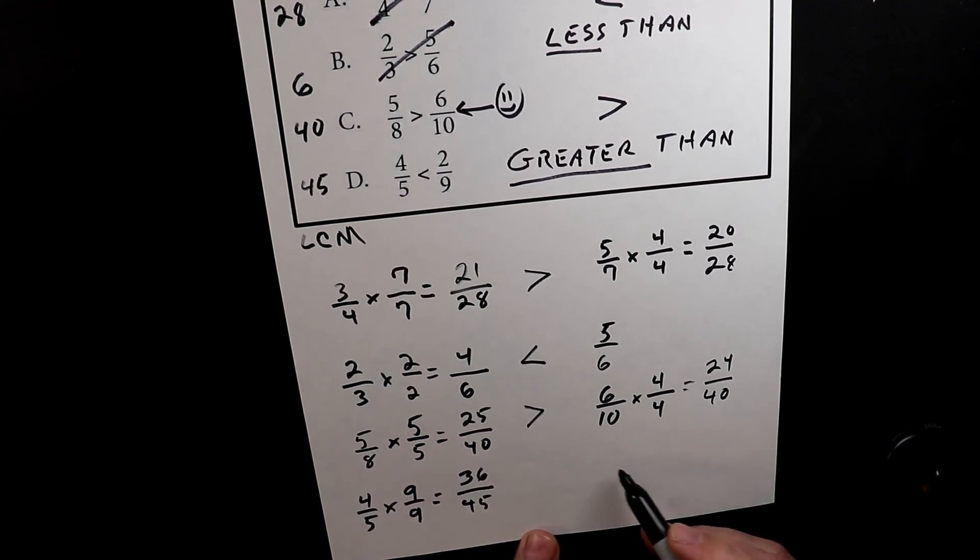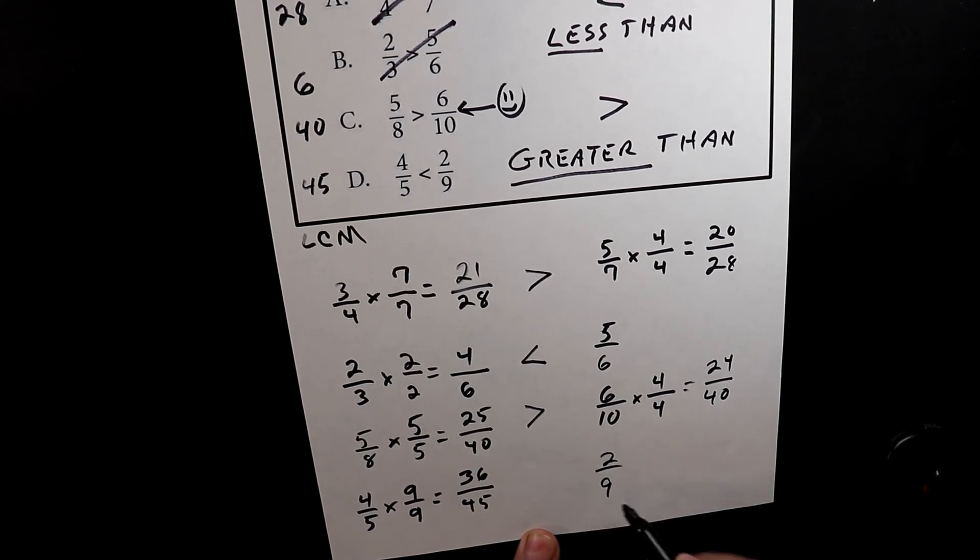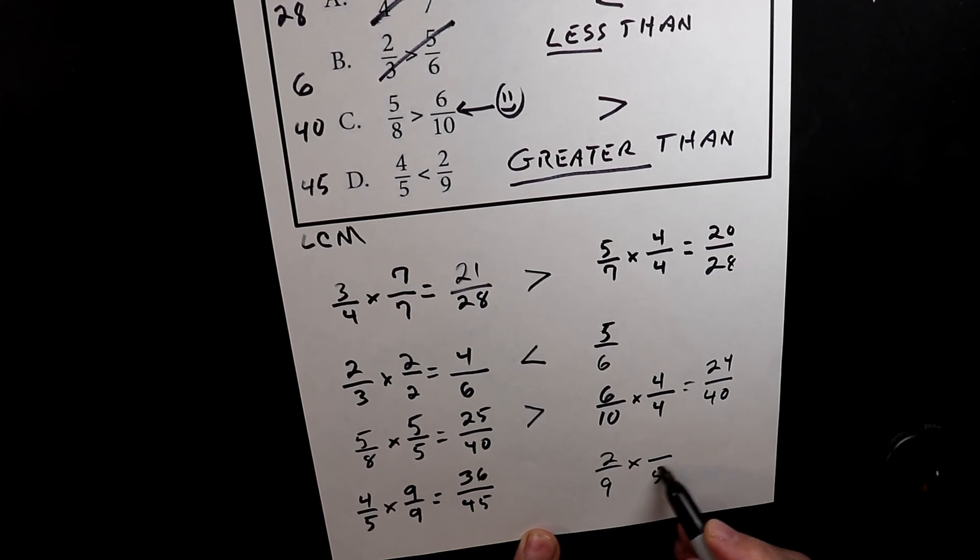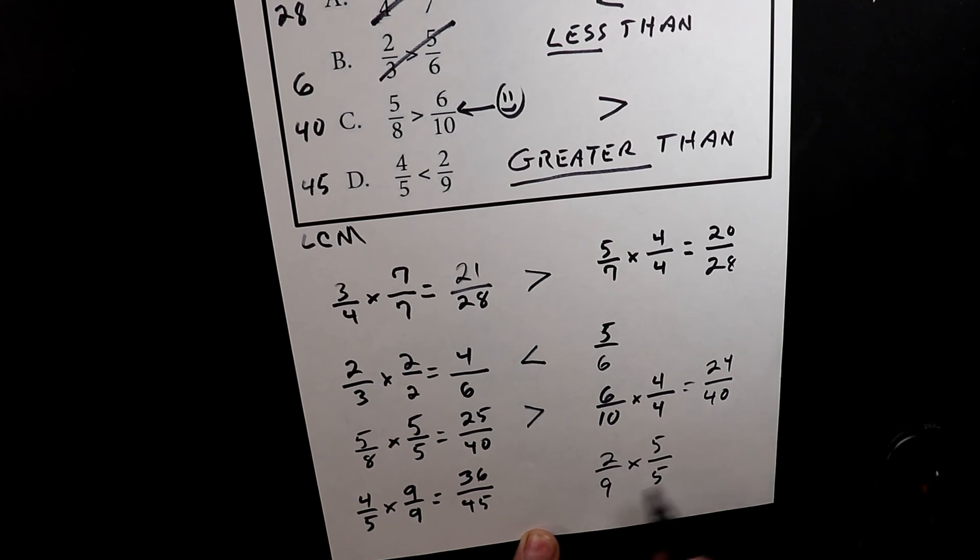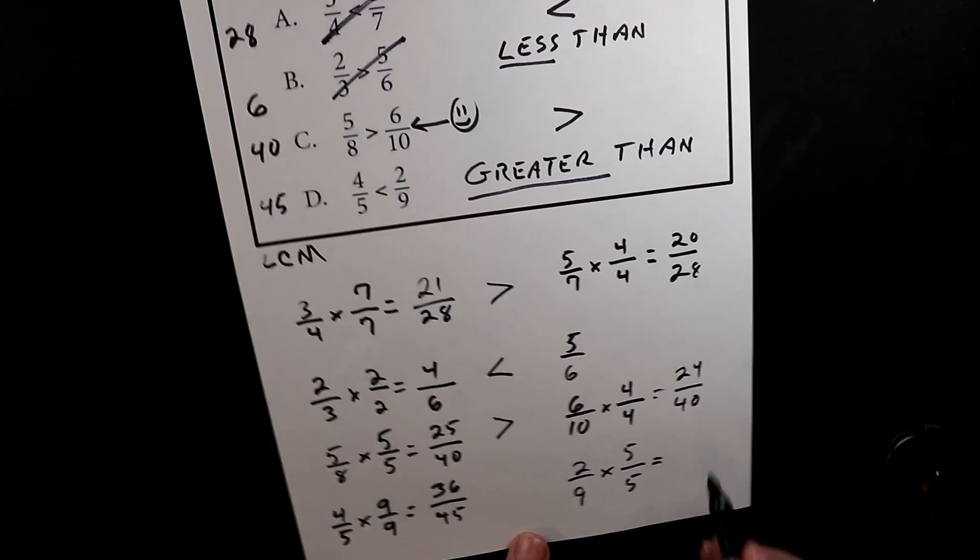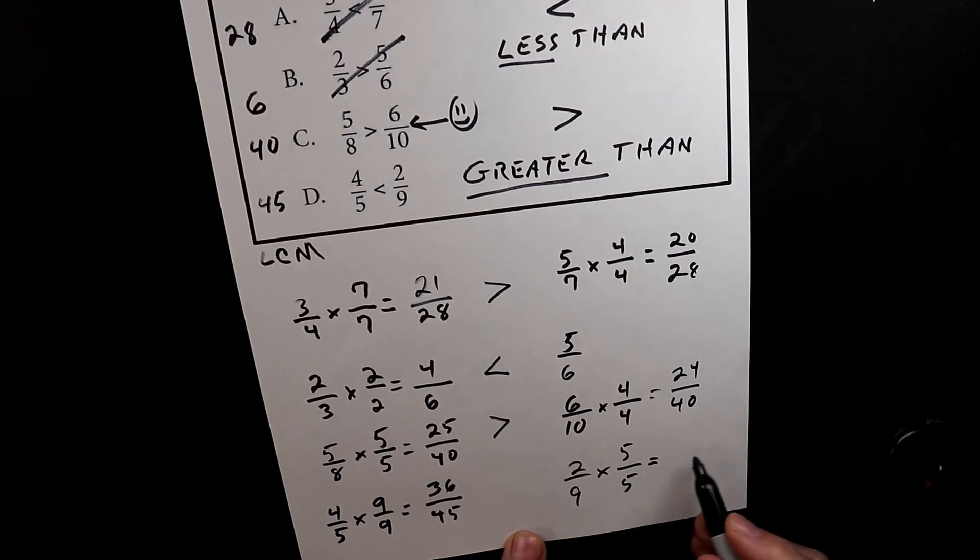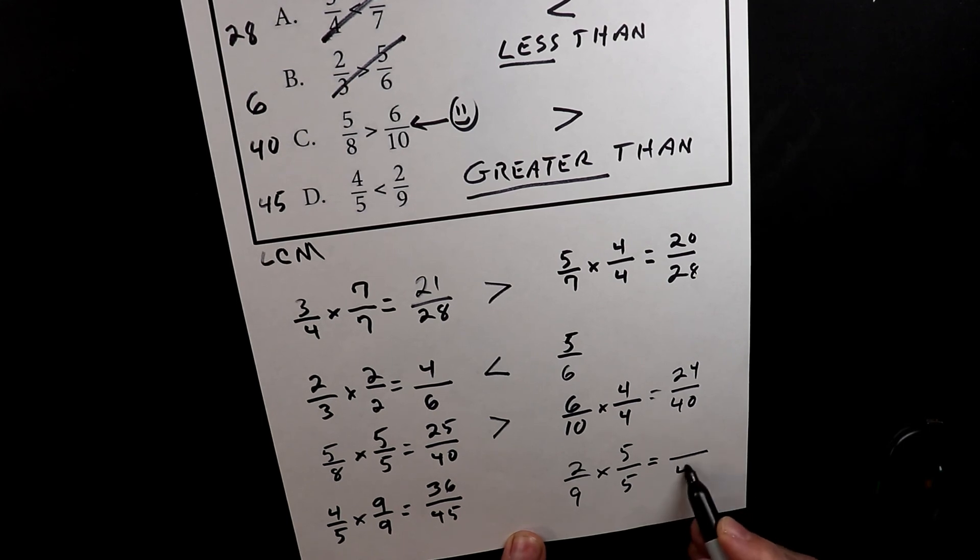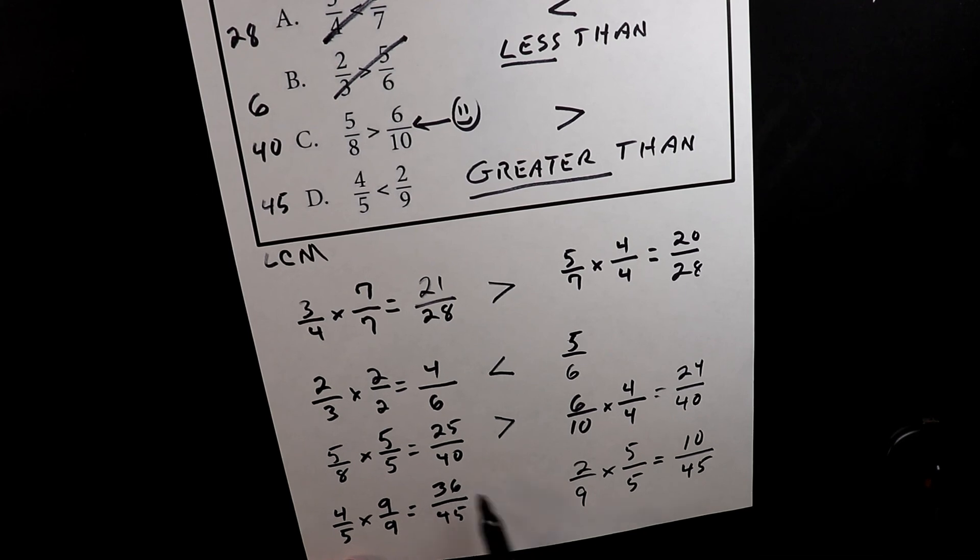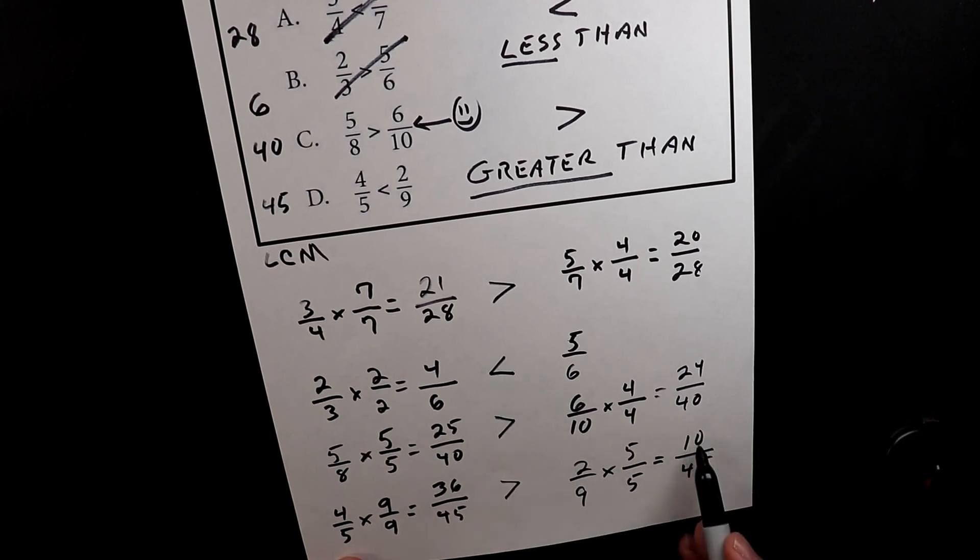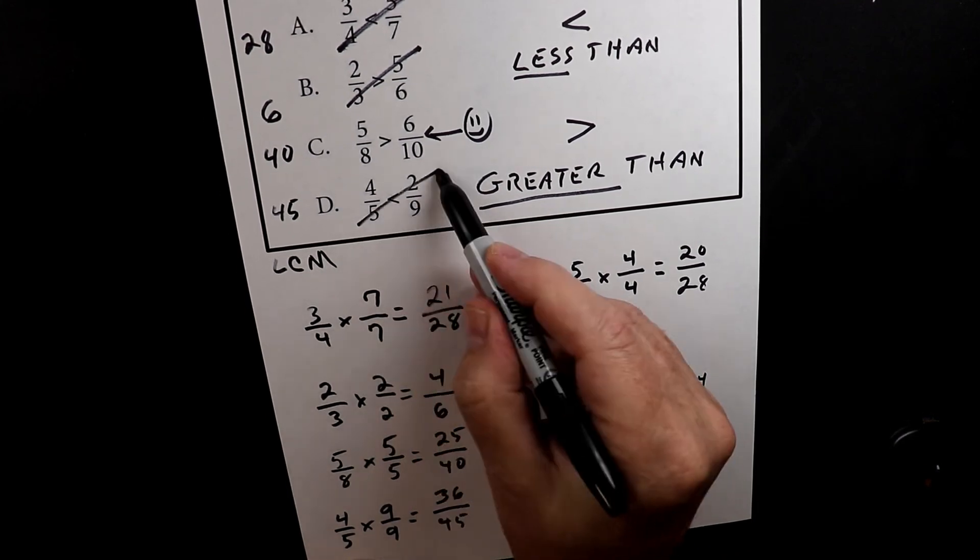On this side, we have 2 over 9. To turn the 9 into a 45, we have to multiply it by 5. 5 over 5 is 1. So we're multiplying this by 1 to find the least common multiple, so they have the same denominators. So 9 times 5 is 45, 2 times 5 is 10. So 36 is obviously greater than 10, so this one is wrong.